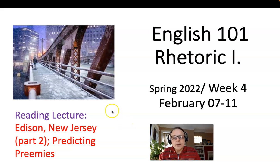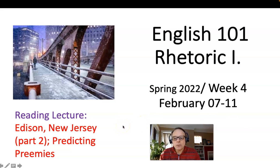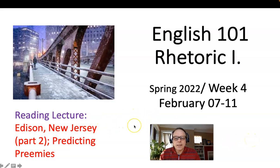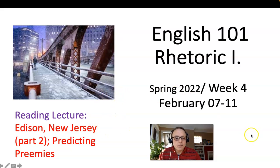Just like we read Hills Like White Elephants and I asked you to write two papers based on that story, we're going to look at another story that has, I think, a lot to do with relationships, called Edison, New Jersey. You'll see Junior's the main character — you might not even find his name right away because he's speaking. He's the narrator but also the protagonist or main character. You'll see as he goes through his job delivering pool tables and card tables and putting them together with his partner, Wayne, his co-worker.